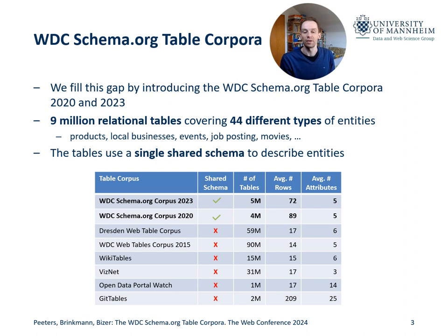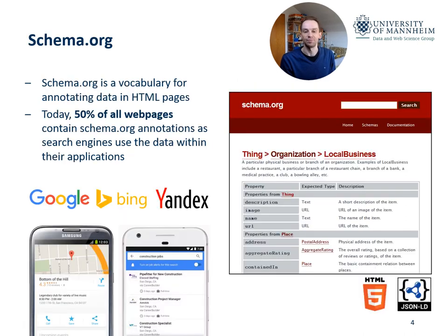In our work, we present the Schema.org table corpora that fill this gap. They consist of overall 9 million relational tables, covering 44 different types of entities like products, businesses, and movies. All of these tables further share the same schema to describe the entities they contain. The schema of the tables originates from the Schema.org vocabulary, which is used by around 50% of all web pages today to annotate data, which is then used by search engine applications, for example.